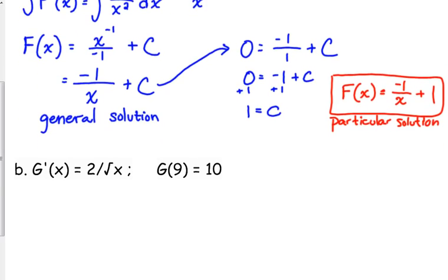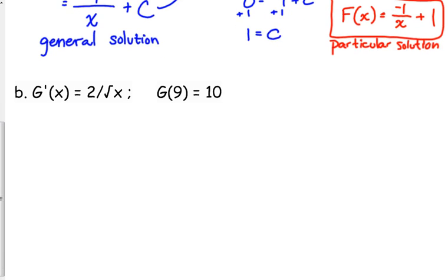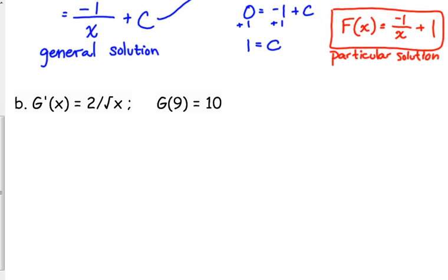Let's look at another one involving a square root. Here we are told G prime of x is equal to 2 over the square root of x, and we're told G(9) is equal to 10. Before I set everything up, I'm going to go ahead and rewrite that expression. I'm going to rewrite 2 over the square root of x as 2x to the negative 1 half, because it was in the denominator, and the square root as an exponent is the 1 half power.